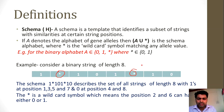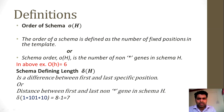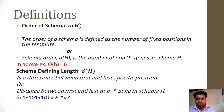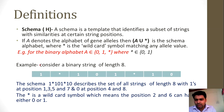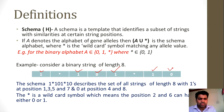Now let's see our next definition: the order of schema, denoted by o(H). The order of schema is defined as the number of fixed positions in the template. In other words, the schema order is the number of non-asterisk genes in the schema. In our previous example, counting the fixed positions: 1, 2, 3, 4, 5, and 6 — we have 6 fixed positions. So the order is 6.